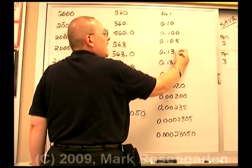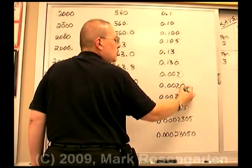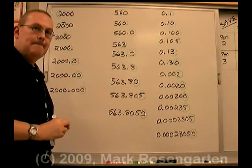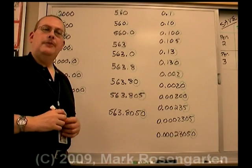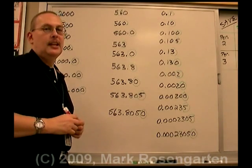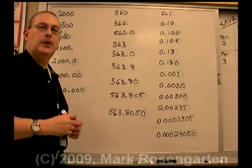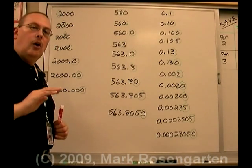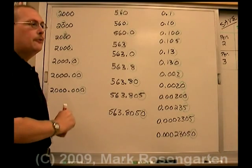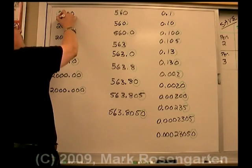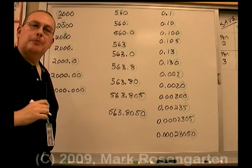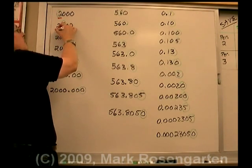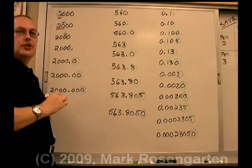The number of significant figures is found very easily. You can do this in your head or on paper by marking up your numbers: underline all the digits starting from the first non-zero digit going until the precision runs out.